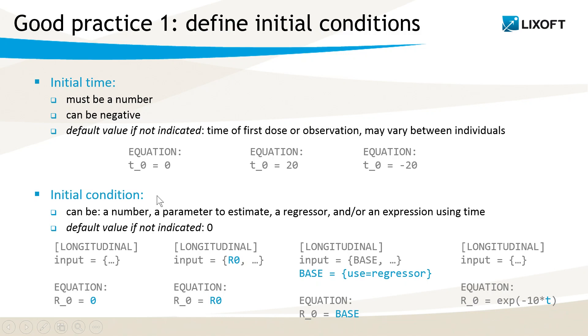For the initial condition, it can be defined via a number, here for instance zero, or it can be a parameter to estimate, here R0 that is passed as an input parameter. It can also be a regressor, in this example base is declared as a regressor and will be read from the dataset, or it can also be an expression using time, for instance as in this example here. If the value is not defined it will be zero, but even if you want zero as an initial value, I strongly recommend to explicitly write it.